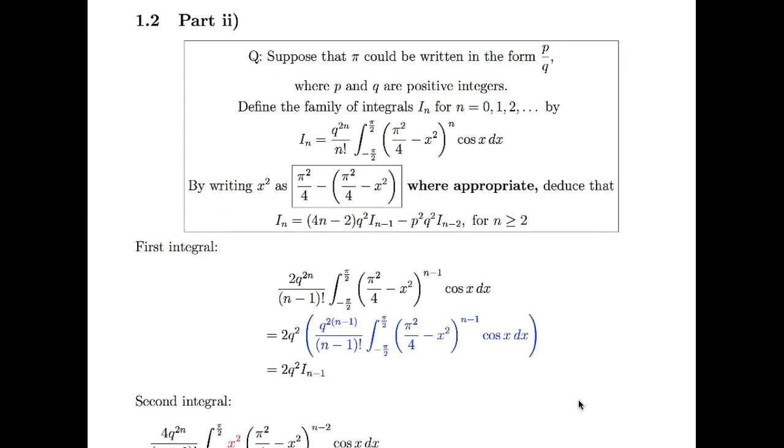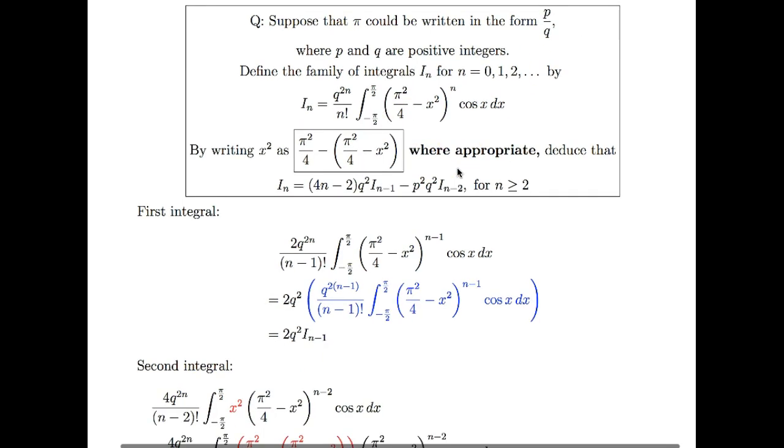So, part two, I want to remind you that in the question, they said suppose that pi could be written in the form p/q with p and q positive integers. So I'm assuming pi is some kind of rational number here. And then I define the integrals again. And they say, by writing x squared as this, where appropriate, deduce my reduction formula, given in the line below.